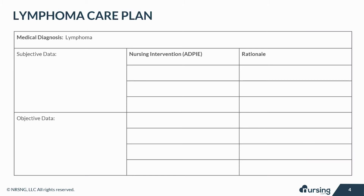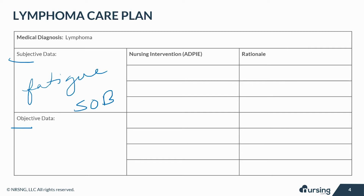Let's take a look at some of the subjective and objective data that your patient with lymphoma may present with. Subjective data are things based on your patient's opinions or feelings. With lymphoma, your patient may complain of persistent fatigue, shortness of breath, cough, itching, night sweats, and lack of appetite.